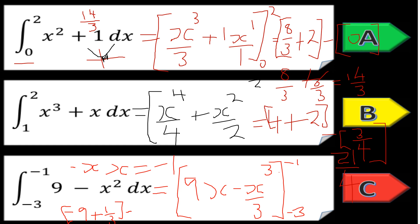Then subtract: nine times minus three, so that'd be minus twenty-seven. And I've got minus minus three cubed over three, so that'd be plus three cubed over three, which is plus nine.